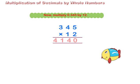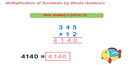Number of decimal places in the multiplicand is 3. So, put the decimal before 140. Thus, 0.345 multiplied by 12 is equal to 4.140.